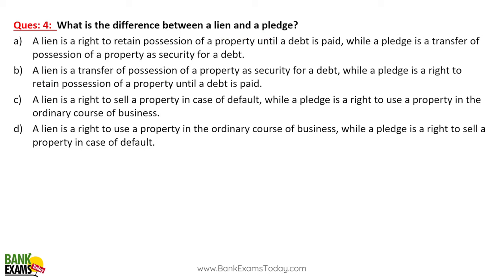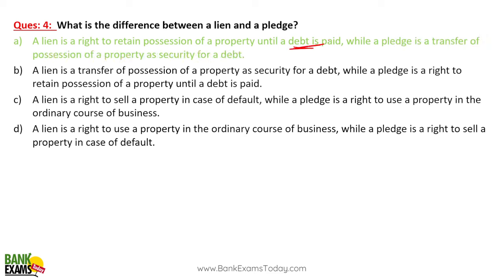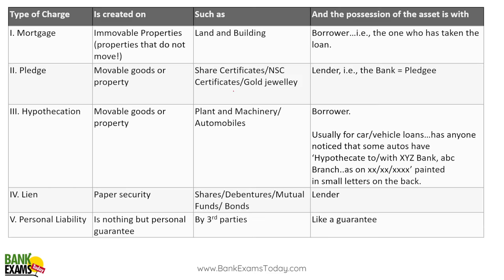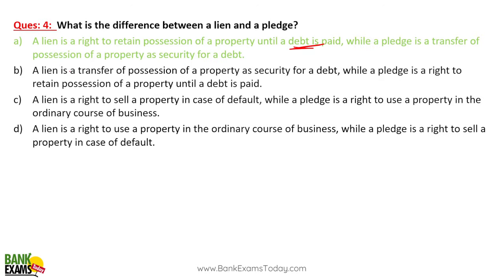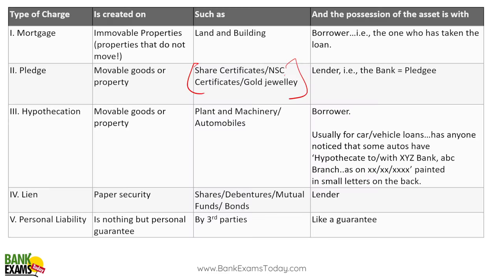The difference between lien and pledge again: a lien is a right to retain possession of a property until the debt is paid, while a pledge is a transfer of possession of a property as security for the debt. In case of a default under pledge, the pawnee can sell off the property.